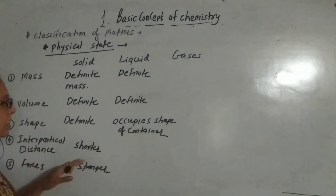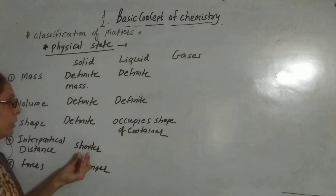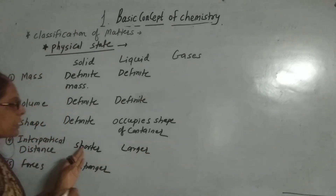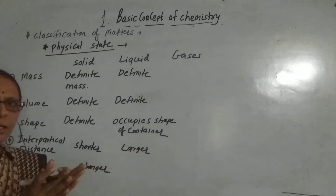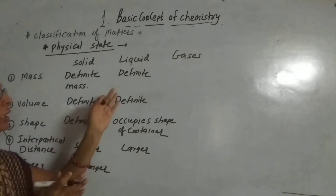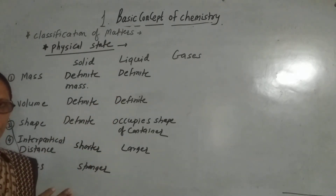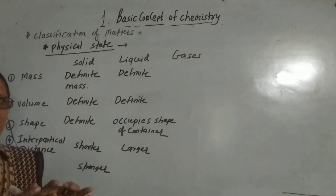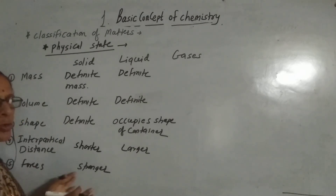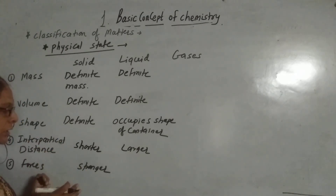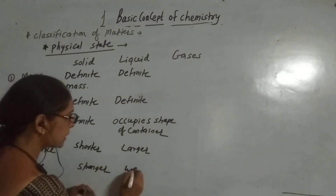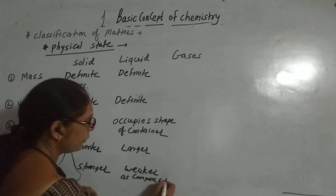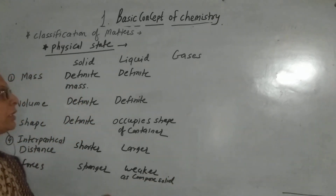The inter-particle distance in liquids is larger as compared to the solid. The intermolecular distance is larger as compared to solid. As the particles of the liquid are mobile to a certain extent, the distance is larger as compared to solid. And therefore, the intermolecular force of attraction or inter-particular forces are weaker as compared to solid. Because it is weaker, liquids are mobile to a certain extent.